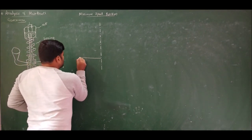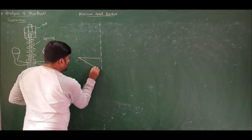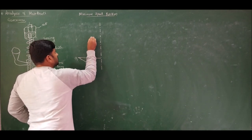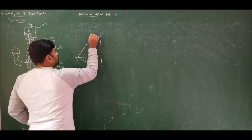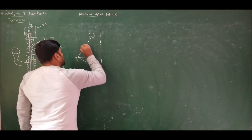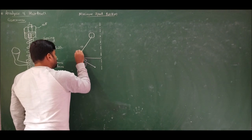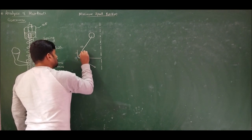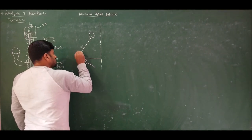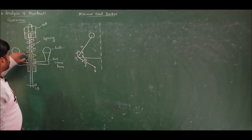For the minimum speed position, consider the line diagram. Let us have the axis of rotation. In the mean position, we have the ball arm and sleeve arm at 90 degrees to each other. For the minimum speed position, the sleeve will move downward and the ball has been moved towards the axis of rotation.